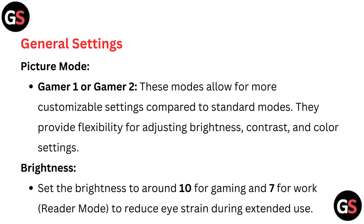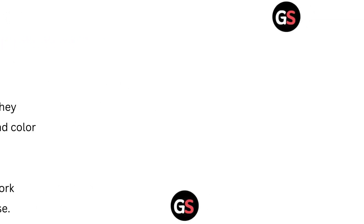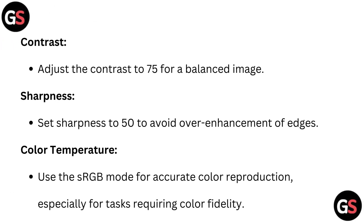Brightness: set the brightness to around 10 for gaming and 7 for work, with Reader mode to reduce eye strain during extended use. Contrast: adjust the contrast to 75 for a balanced image. Sharpness: set the sharpness to 50 to avoid over-enhancement of edges. Color temperature: use sRGB mode for accurate color reproduction, especially for tasks requiring color fidelity.